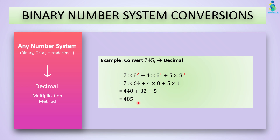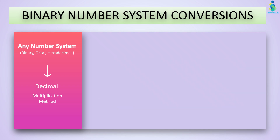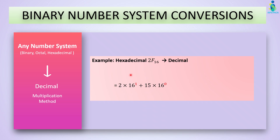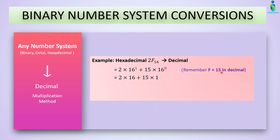The final answer for octal to decimal will be 485 in decimal. Now let's convert 2F₁₆ into decimal. We multiply each digit by 16 raised to its positional power. Here 16⁰ equals 1. F is 15 in decimal. Solve the powers and add the results — the answer will be 47 in decimal.